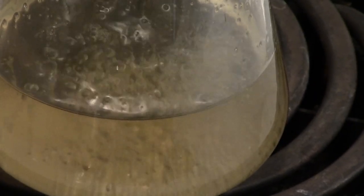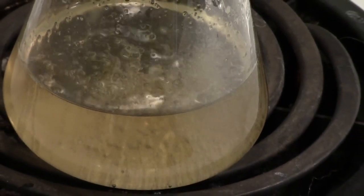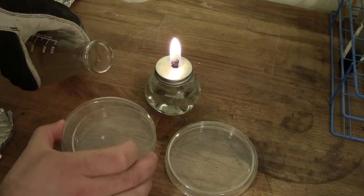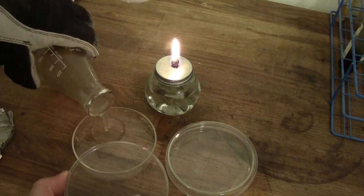Once everything is mixed, bring this to a boil for five minutes, or sterilize it in your pressure cooker, and then pour the plates, just as I showed you with the dry malt agar plates.